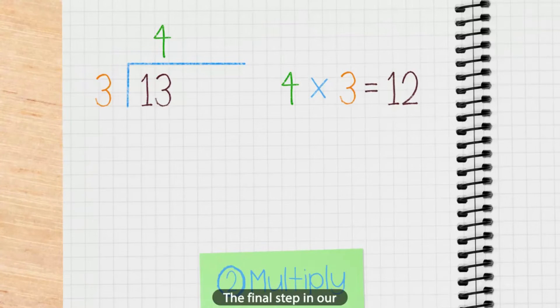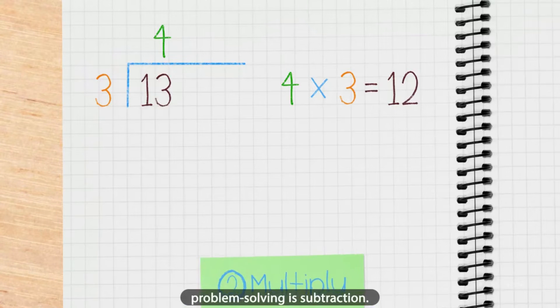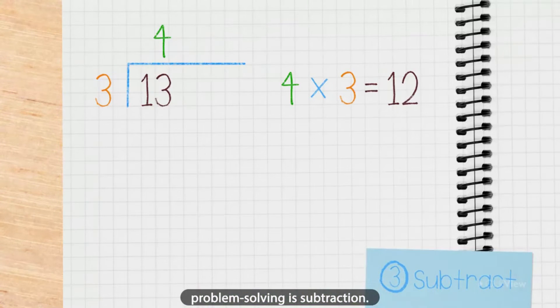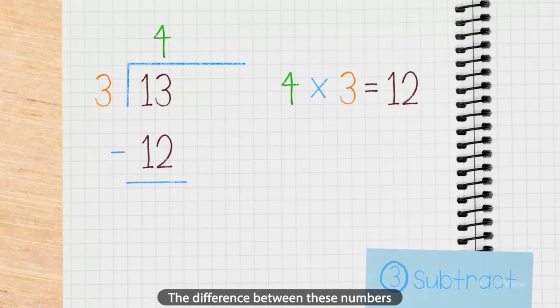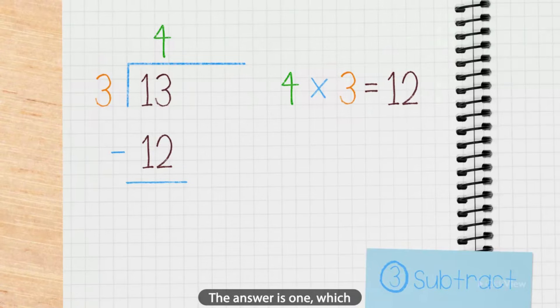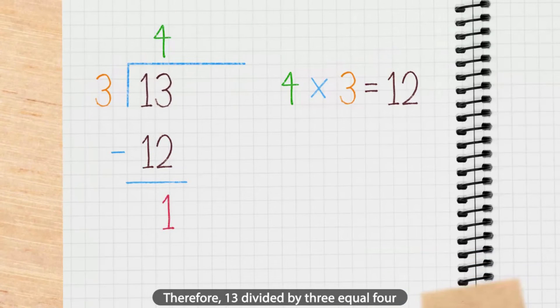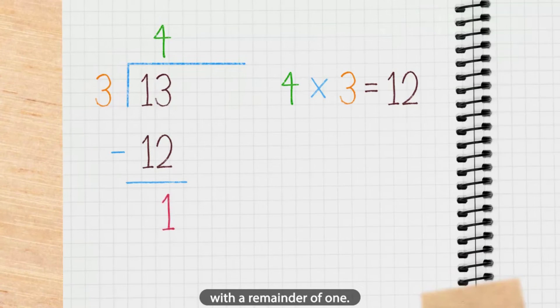The final step in our problem solving is subtraction. Subtract 12 from 13 to find the difference. The difference between these numbers is what the remainder of this problem is. The answer is 1, which means the remainder in this problem is 1. Therefore, 13 divided by 3 equals 4, with a remainder of 1.